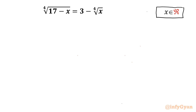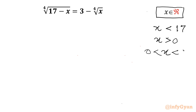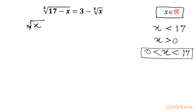Let's get started by writing the domain of the equation. On the left hand side we have 4th root of 17 minus x, so for a real solution x should be less than 17. On the right hand side we have 4th root of x, so obviously x should be positive. Taking the intersection of both conditions gives us the domain interval 0 to 17. After rearranging, I will write 4th root of x plus 4th root of 17 minus x equal to 3.